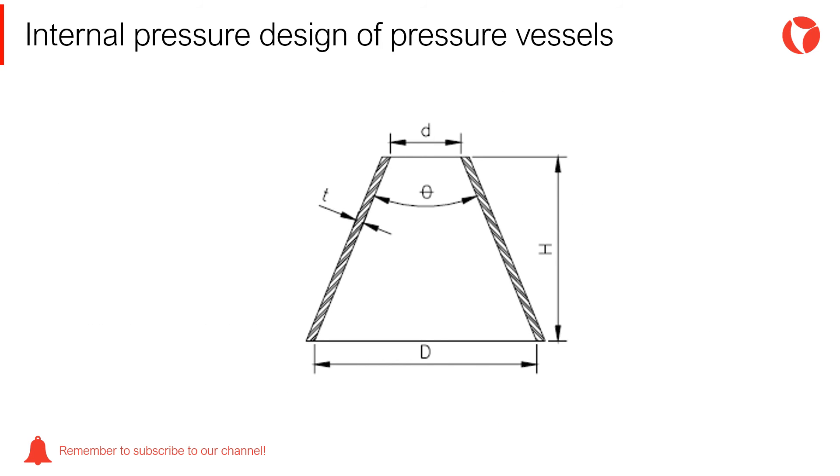Once the required cone thickness due to internal pressure has been calculated, the cone-to-shell junction must be evaluated. If the conical transition doesn't have knuckles, there is a stress discontinuity in the cone-to-shell junction, mainly due to the effects of internal pressure and axial loads, caused by the self-weight, for example. These loads could over-stress the area.